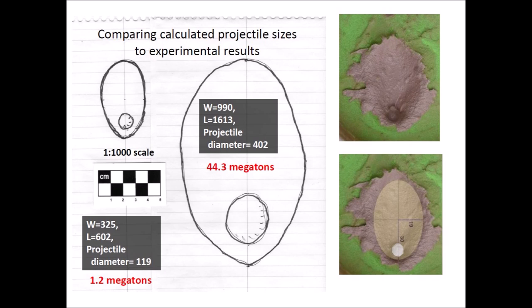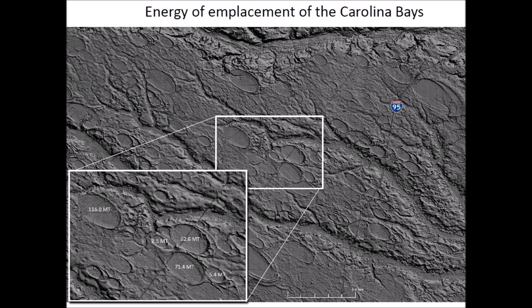I mentioned that the Carolina Bay with a length of 1,613 meters was created by an impact of 44.3 megatons, and that this energy was comparable to the most powerful hydrogen bomb ever tested by the Soviet Union — the Tsar Bomba, with a yield of 50 megatons. I have previously calculated very energetic impacts for large bays; the inset shows a Carolina Bay with a calculated energy of formation of 116 megatons.